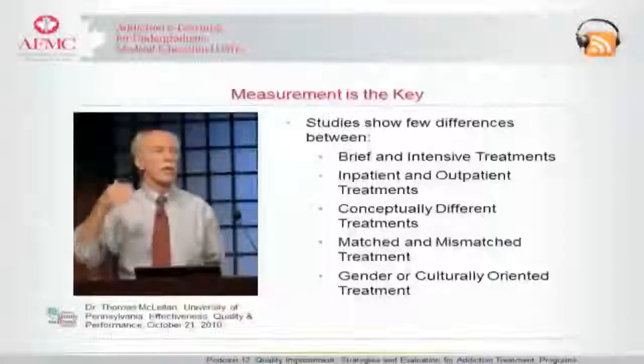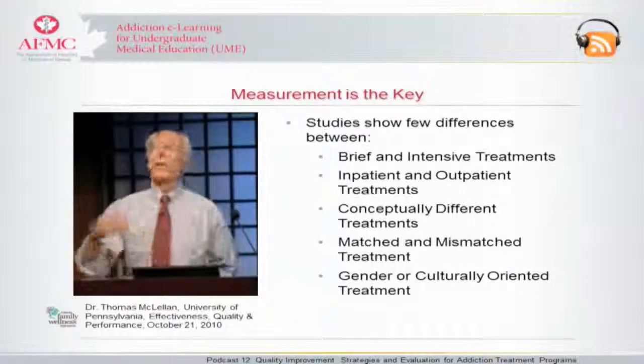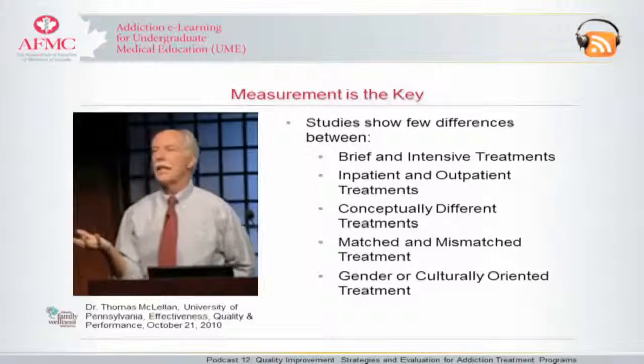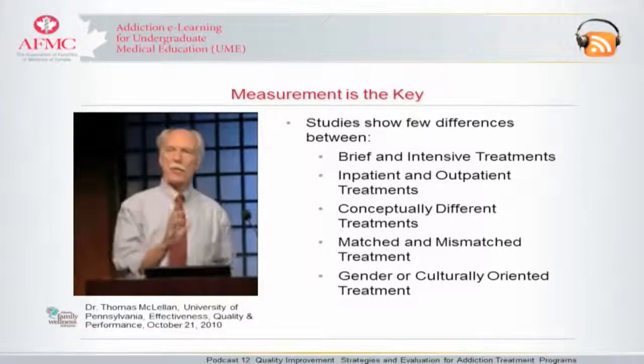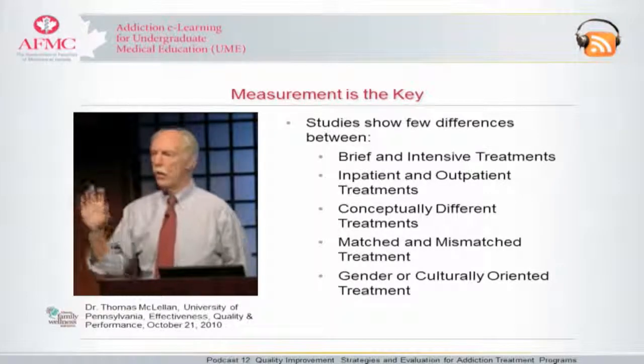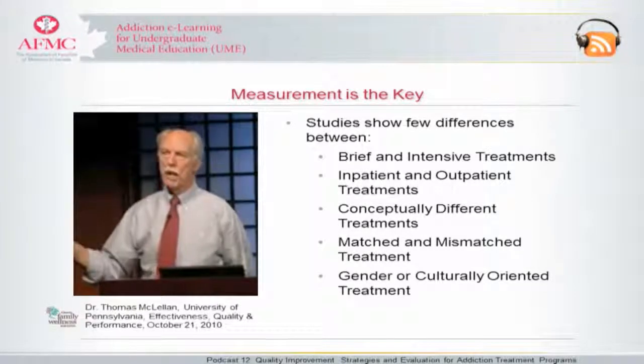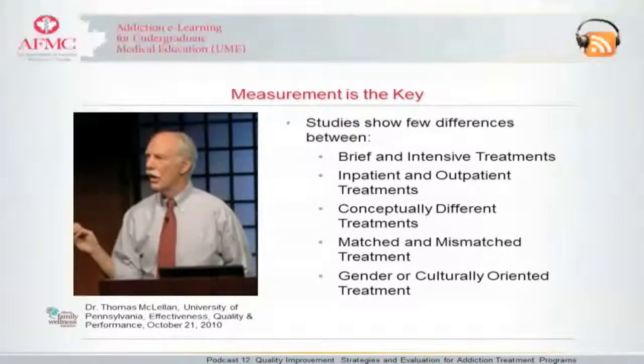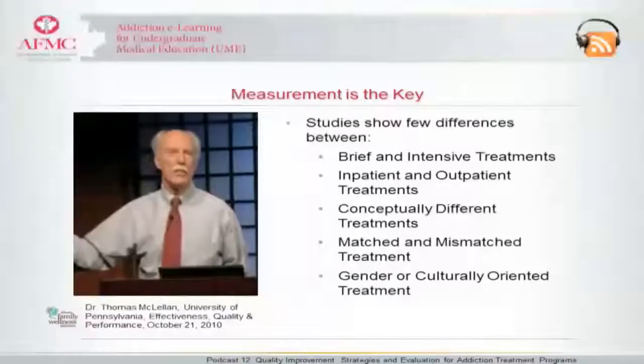Clinicians know intuitively that you've got to match the kind of care to the kind of patient. A matched patient gets the care appropriate for them, while a mismatched patient doesn't. But the awkward thing is, six months or 12 months later, it doesn't make any difference — there's no difference in outcomes.